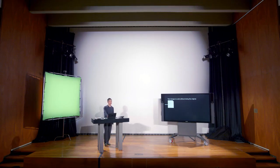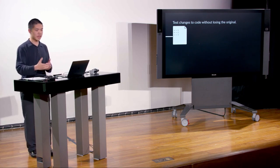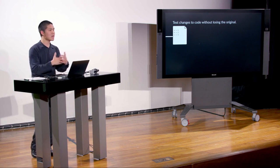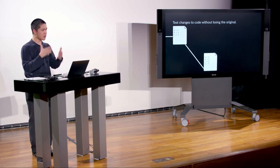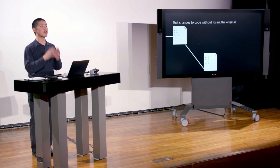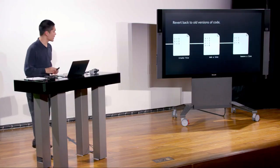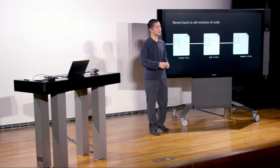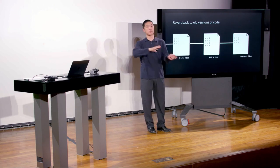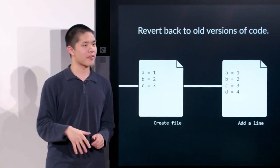Git is also very good at letting you test your code without losing your original copy. If you have a working web application and want to add a new feature but worry it might break existing functionality, Git lets you experiment without losing the original. Only once you're happy can you merge your new changes in. Finally, Git is good at reverting back to old versions — if your most recent version doesn't work, you can revert to a previous one.